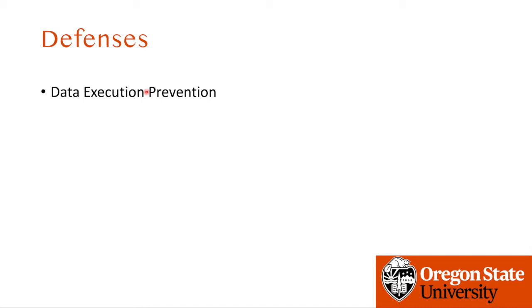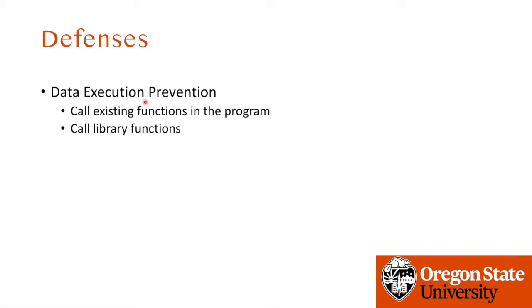To counter this, attackers may call existing functions in the program's address space — functions written in the program as well as functions loaded in dynamic libraries. So if DEP is active, because we cannot run our injected data as code, we must reuse existing code to launch our attack.